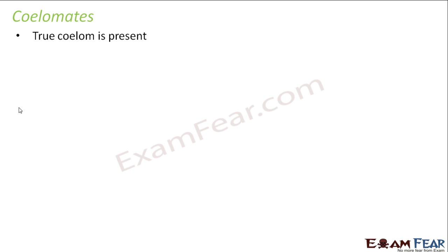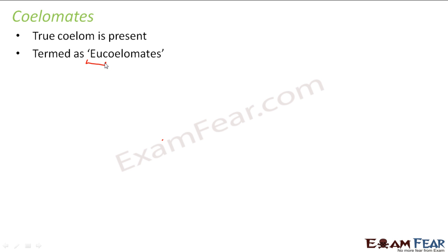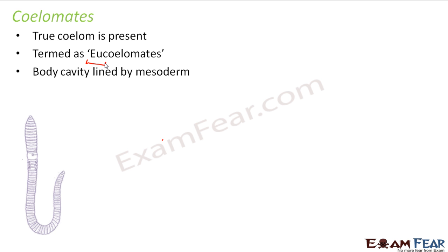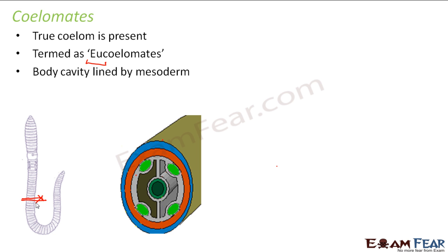Let us discuss coelomates first. In coelomates, a true coelom is present. They are also known as eucoelomates — 'eu' is often used as a substitute for 'true.' The body cavity is lined by mesoderm. Taking an earthworm as an example, if you cut the earthworm and study its cross-section, it will show you clearly where the coelom is present.